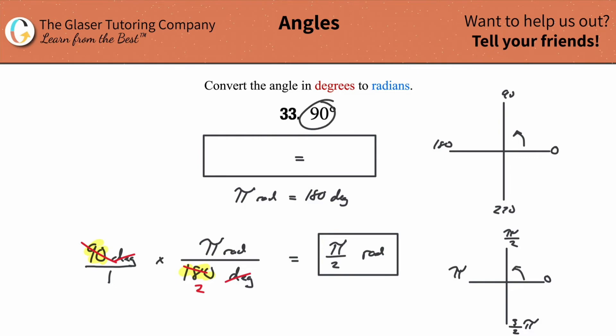So it's asking you 90 degrees, which is here, is equivalent to how many radians? Pi over 2.